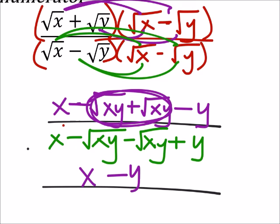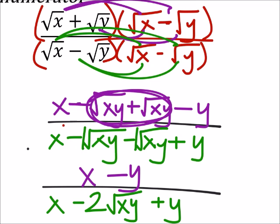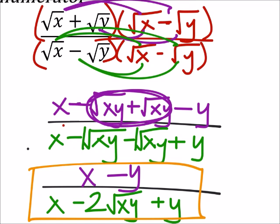And so, in the numerator, once again, these two are going to add to zero. So I've got an x minus y. And in the denominator, I've got x, that's a minus one root xy, and then a minus another one root xy, which gives us a negative two square roots of xy, and then plus the other y. That right there is as far as we can take this one.